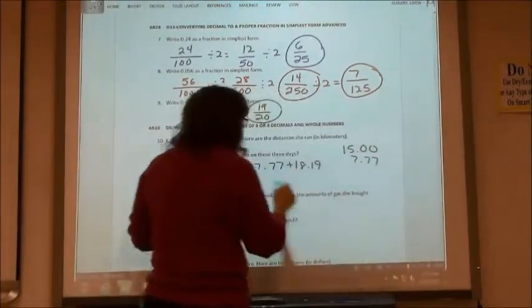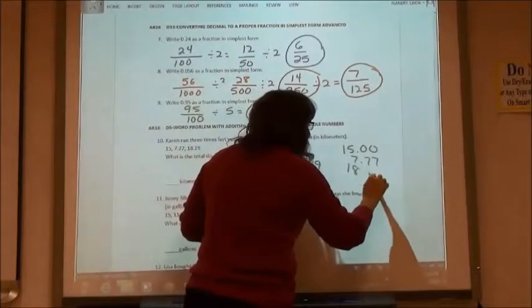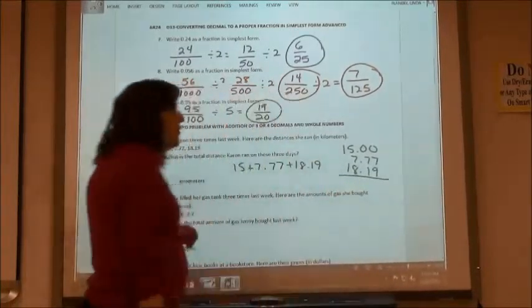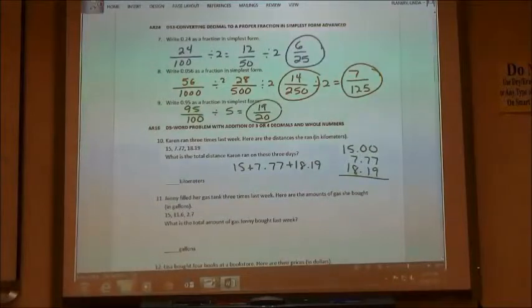7.77 and 18.19. And then I can add them once I have them all lined up nice and neat with my decimals straight up in a row there.